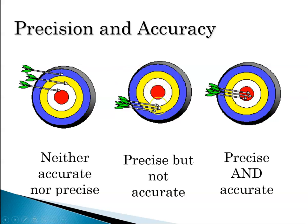To summarize: you can be not accurate and not precise — measurements far apart and far from the true value. You can be precise but not accurate — measurements close together but far from the target. Or you can be both precise and accurate — measurements close together and at the target value.